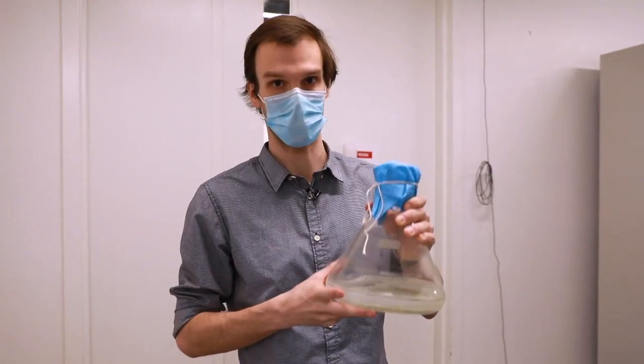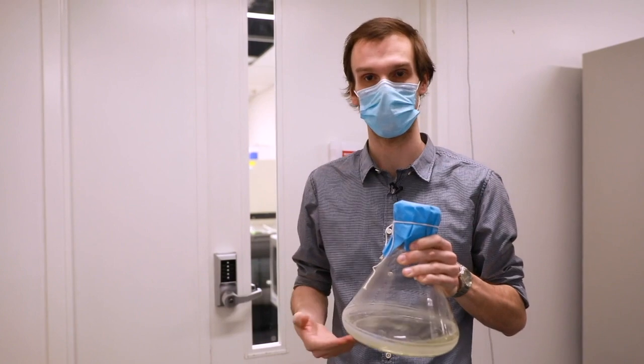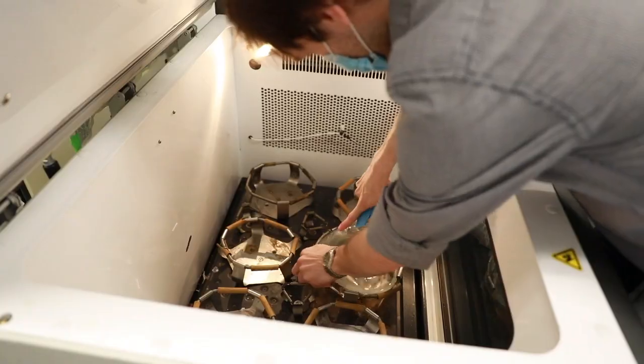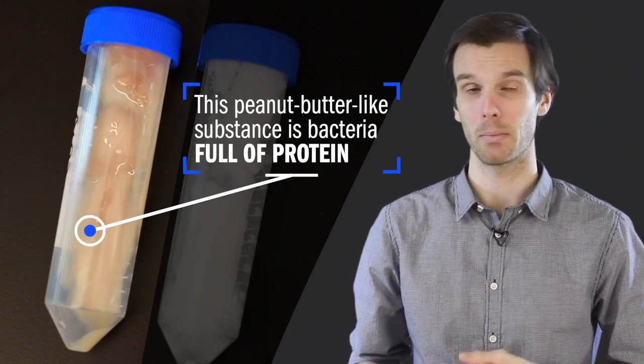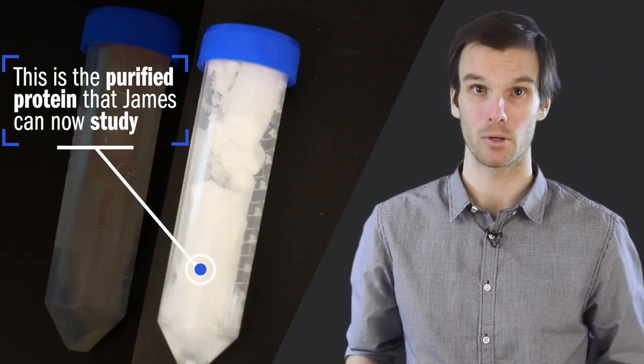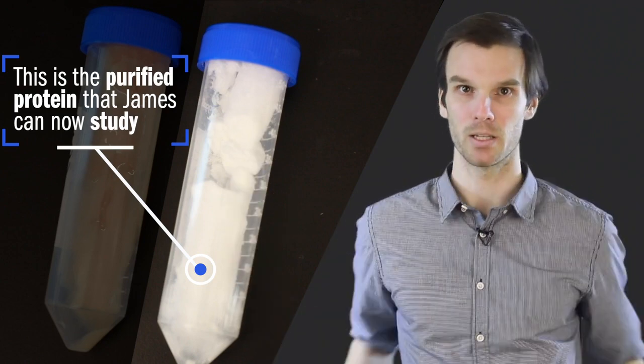This is a flask of bacteria food. We are in front of the shaker room, which is where we grow bacteria and where bacteria make protein. Shake, shake, shake. Shake and bake. Then we separate the protein from the bacteria. We purify the protein. And once we have this purified protein, let the experiments begin.